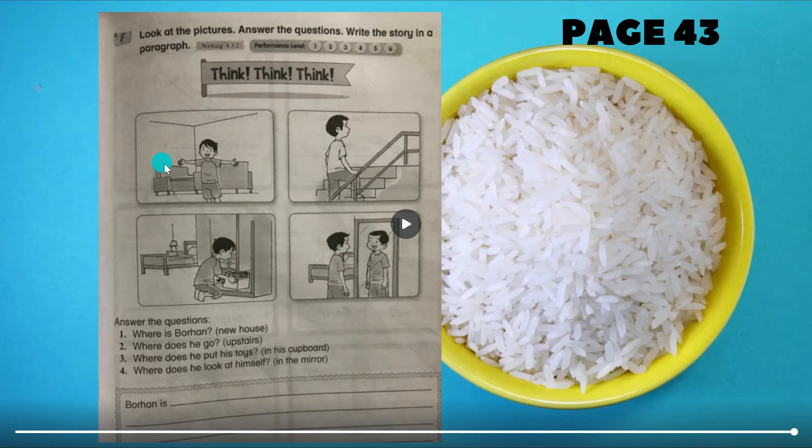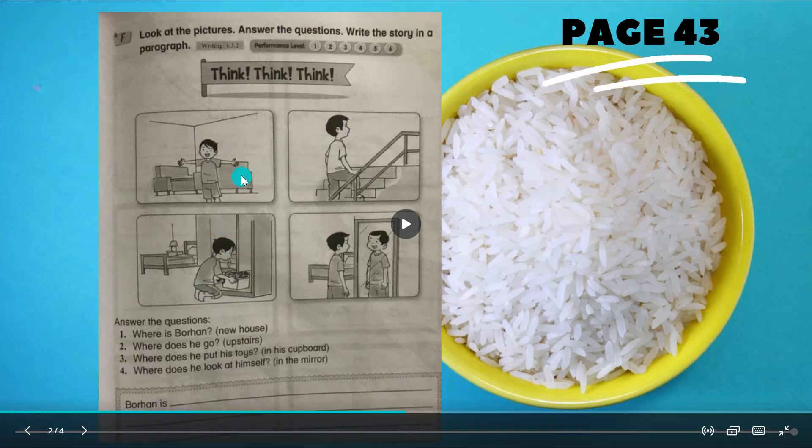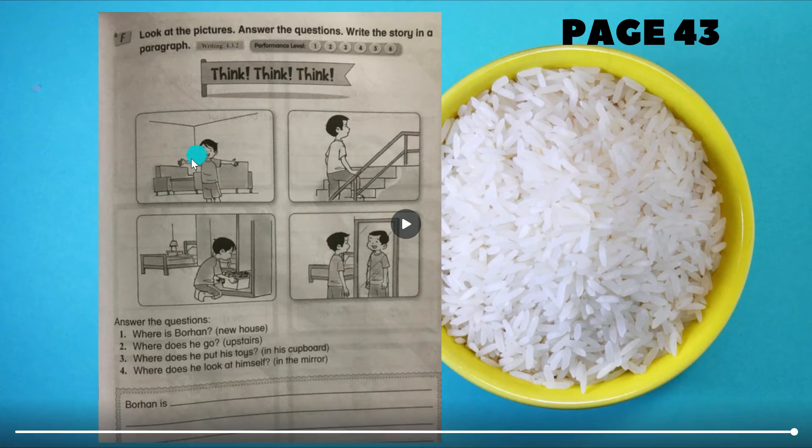So mari kita bincang. Sebelum bincang soalan tu kita tengok gambar dulu. Picture one - his name is Borhan and where is he? Macam ruang tamu. Picture two - what is he doing? Naik tangga, naik atas. Picture three - macam dia tengah buka almari, mungkin dia simpan barang ke atau ambil barang di bilik tidur dia. Picture four - dia tengok dalam cermin, the mirror.